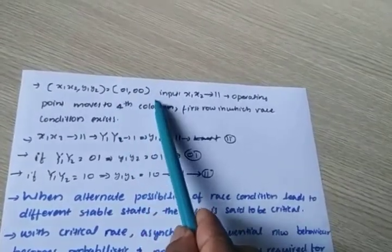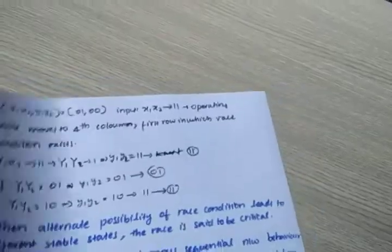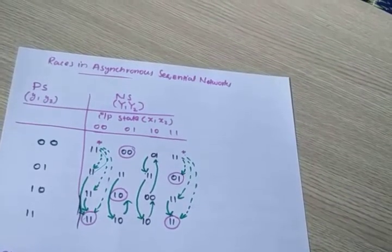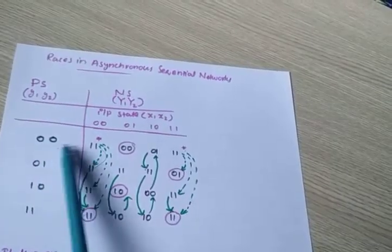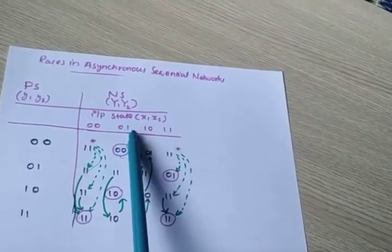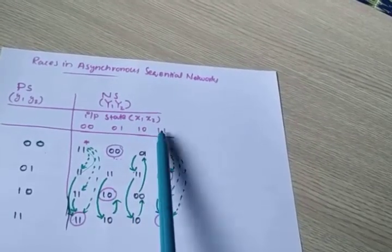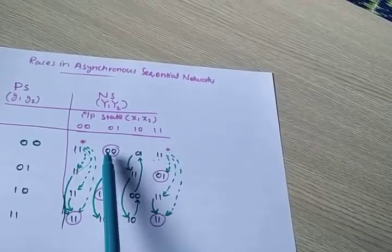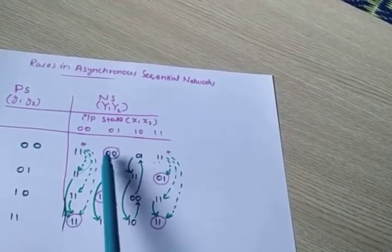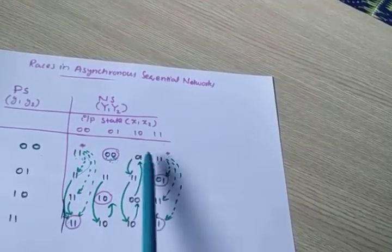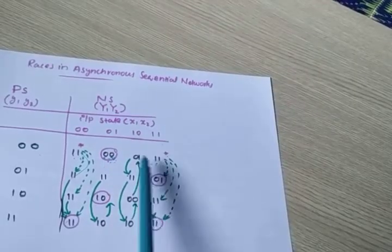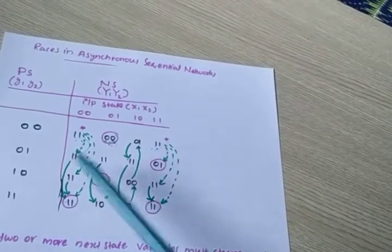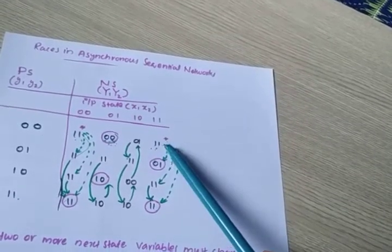Consider the case x1, x2 = 0, 1, y1, y2 = 0, 0. The input changes to 1, 1. Both variables of x1, x2 are changing from 0, 0 to 1, 1. The system reaches 1, 1 as the present state, and the next state is a stable state. A dashed line is drawn from this transition to the stable state.